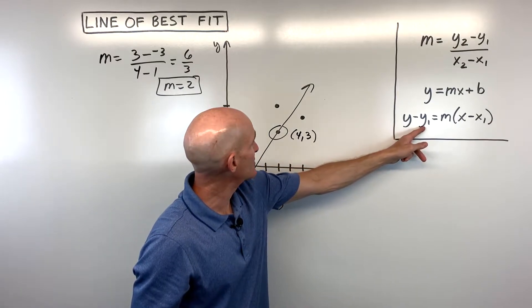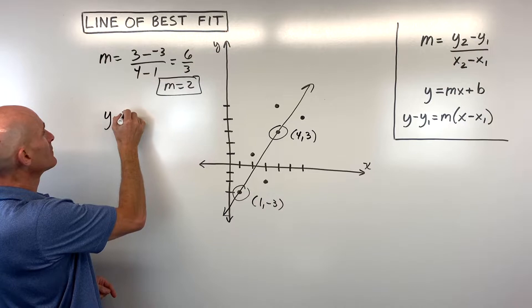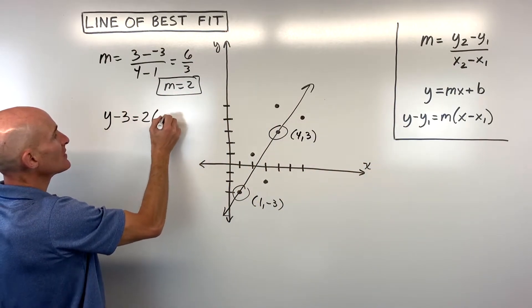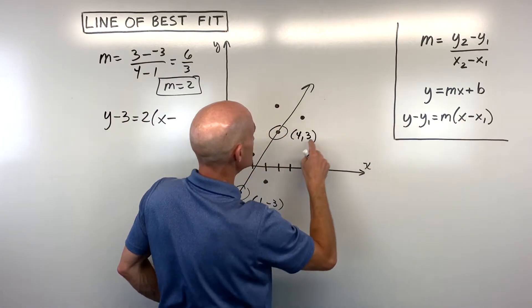So we'll say y minus the y coordinate. So y minus three equals the slope, which we figured out is two times x minus the x coordinate of the point, which is four.